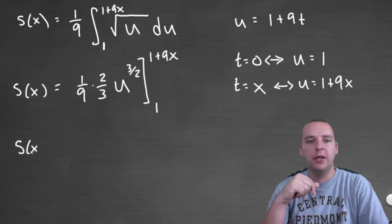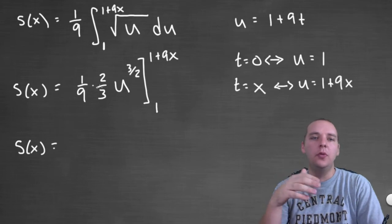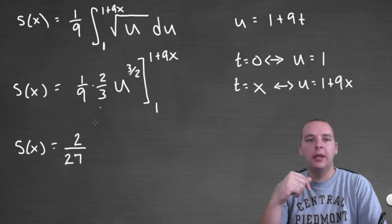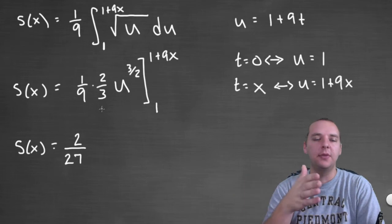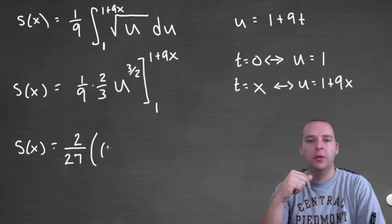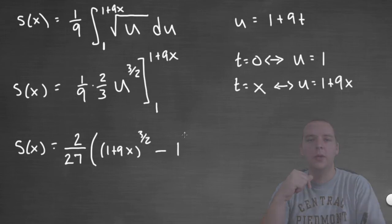So s of x, this will be our final answer here, we'll have two over twenty-seven, if we want to just combine this into one fraction, two over twenty-seven. And I'll just do the subtraction, and I'll leave the two over twenty-seven factored out, out front here. So we'll plug in 1 plus 9x, get 1 plus 9x raised to the 3 halves power, and then minus, and then we'll plug in a one, and get one.